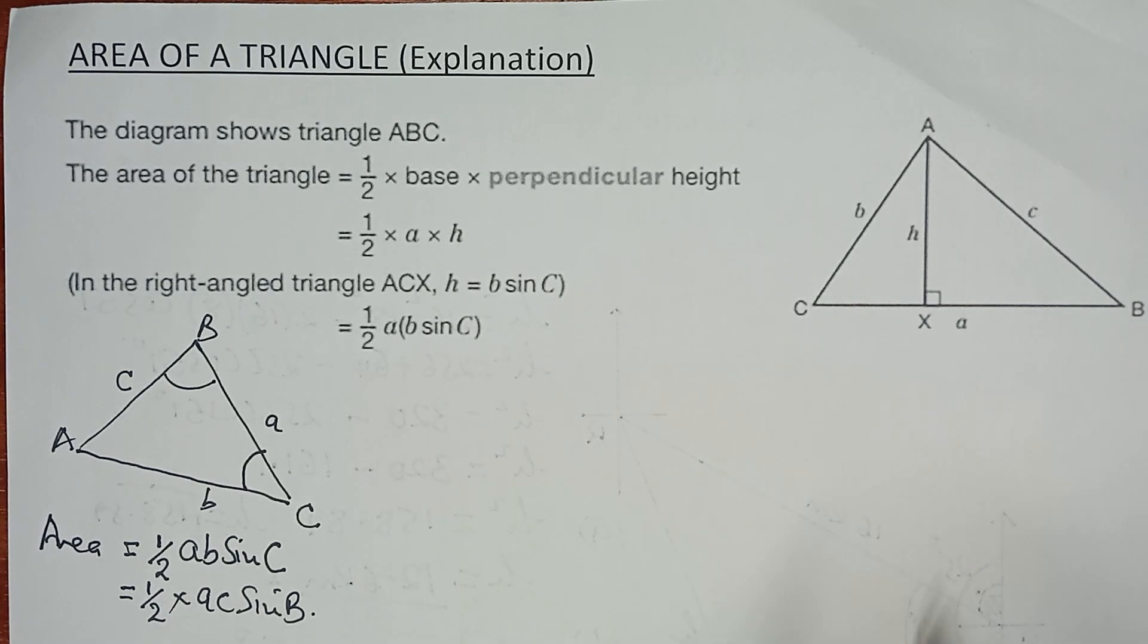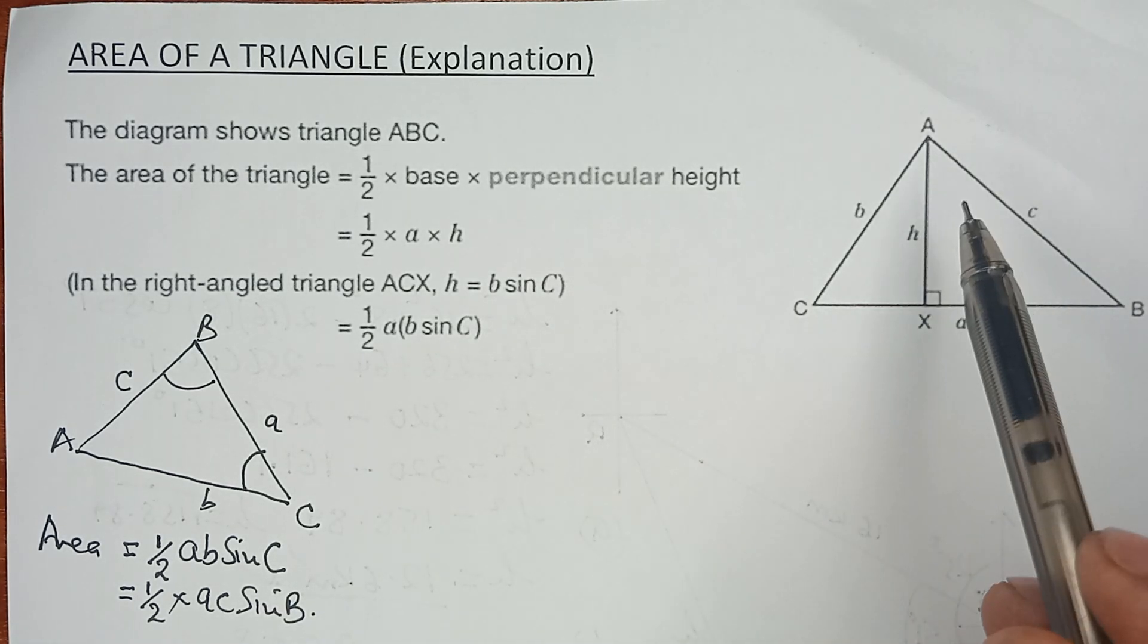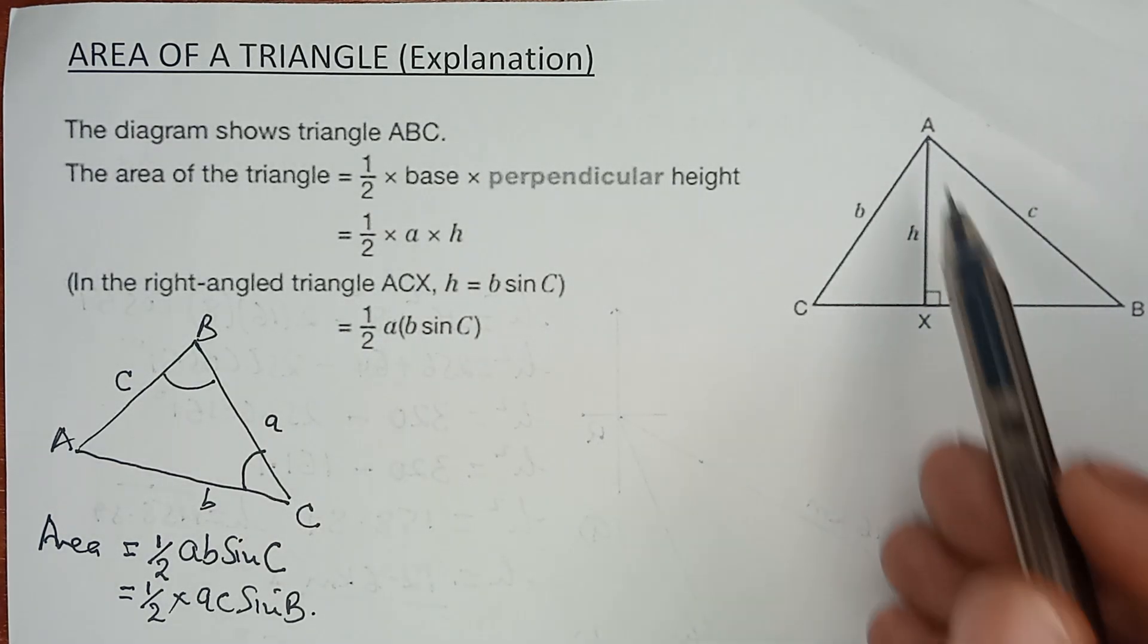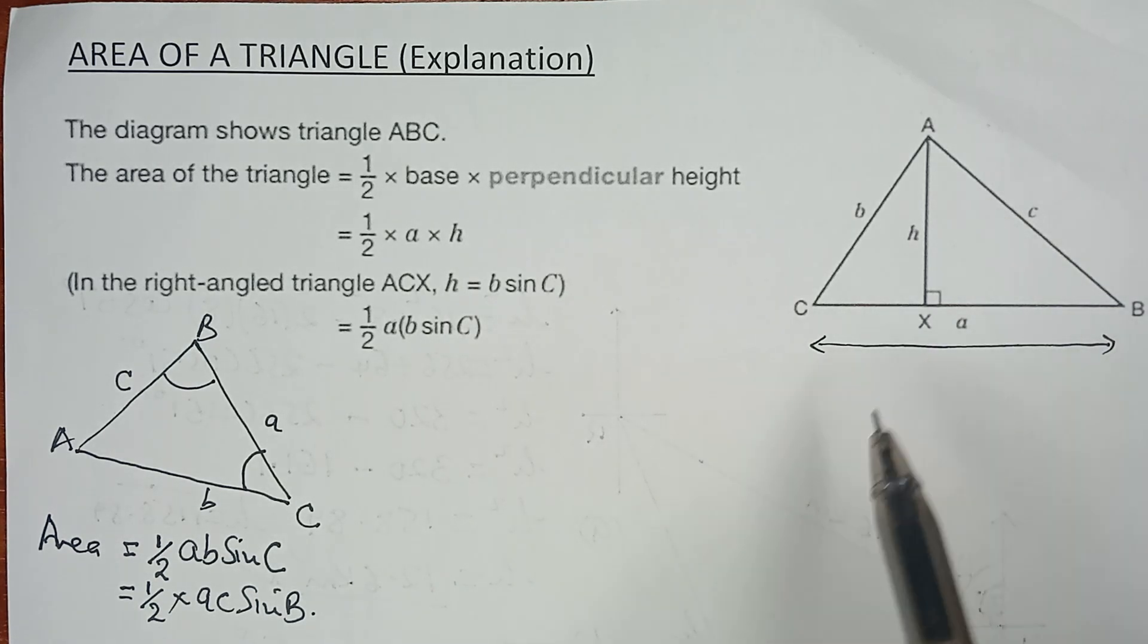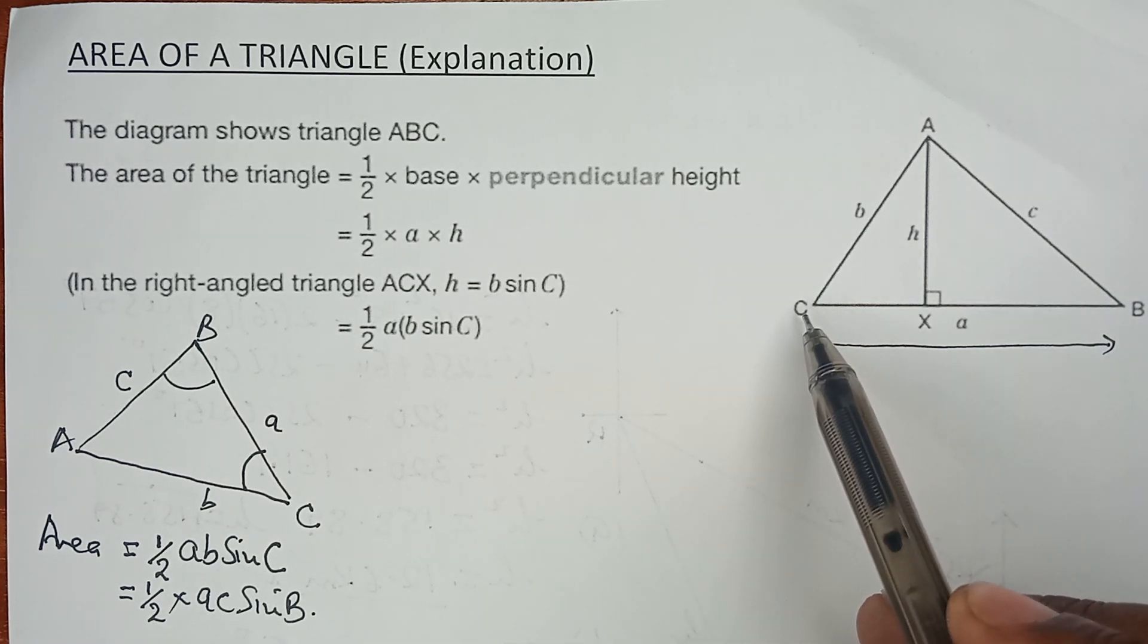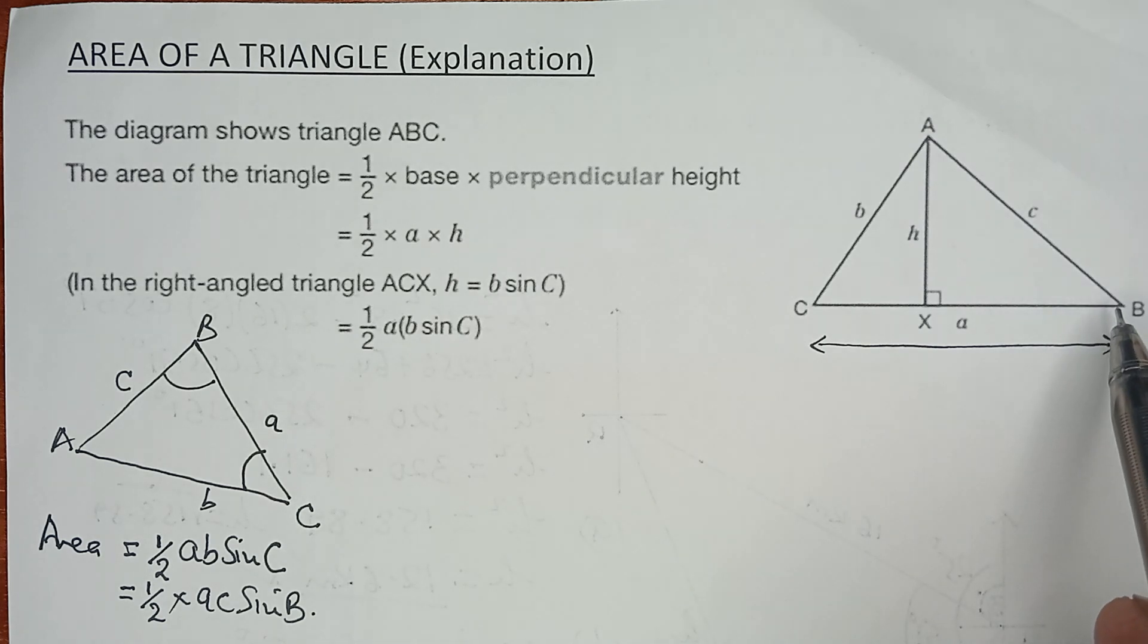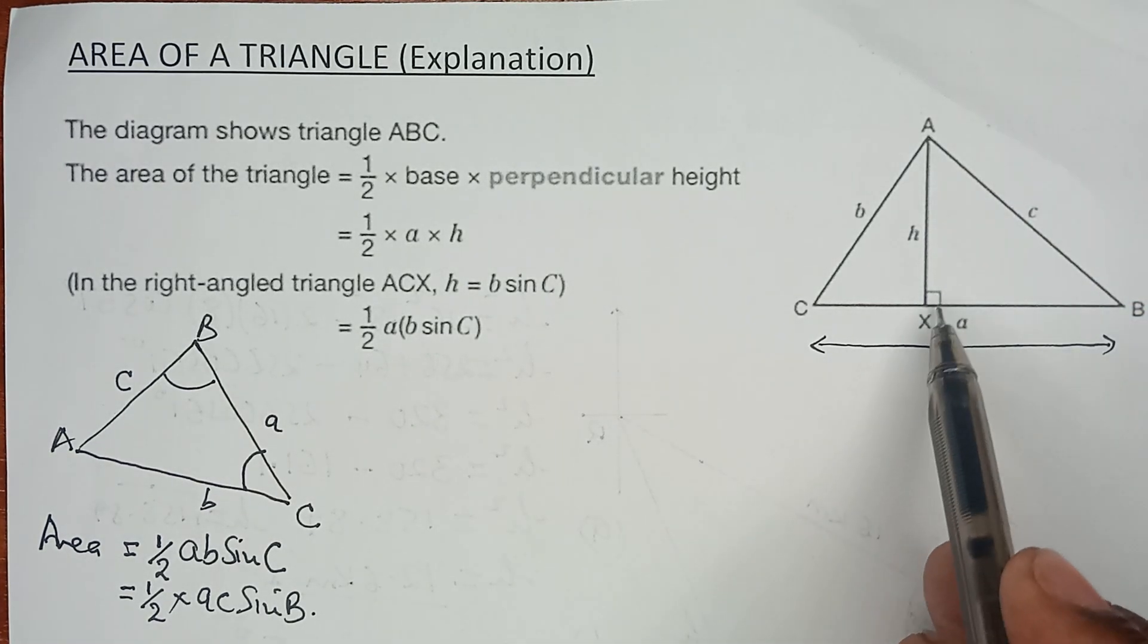But I want to explain using this triangle how this comes about. If you look at this particular corner, we have a triangle A, B, C, and the whole of this side is side A, and this side is C opposite angle C, and this side is side B opposite vertex B. So we know this one is now the perpendicular height, you can see 90 degrees here.